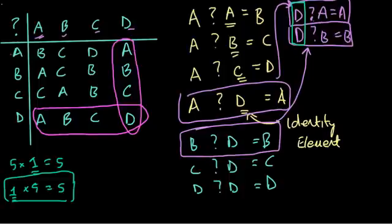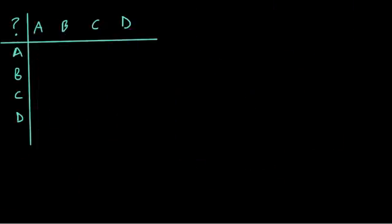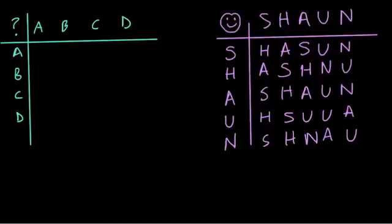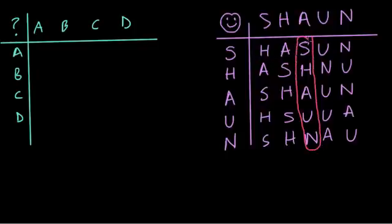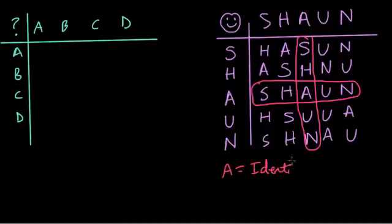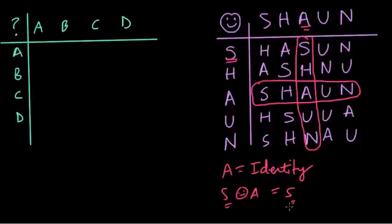Let's look at another example to see if this is making sense. Here we have different letters and a different operation — a smiley face. How can we quickly find the identity element? We have the name 'Sean' listed, and it intersects here with 'Sean.' A is at the intersection of those two words, and that's the identity element. A equals the identity. As a test case: S smiley face A gives us S. So we start with S and end with it.